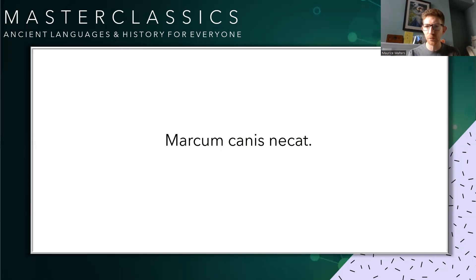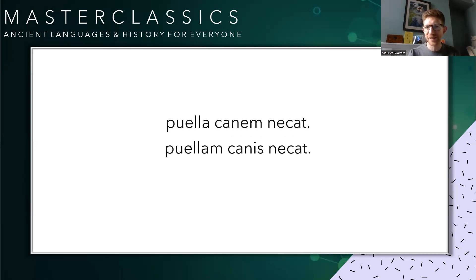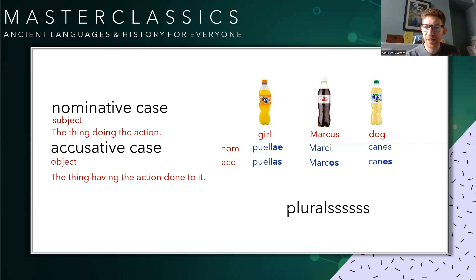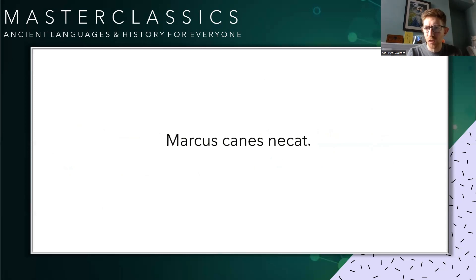Marcus comes to a sticky end in one of them and the dog comes to a sticky end in another. We then looked at how puella operates in the same way: puella canem necat and puella canis necat. Again, the word order is exactly the same, but the meaning is entirely different. The first means the girl kills the dog; the second, the dog kills the girl. Then we had a quick look at plurals. Puella becomes puellas in the accusative plural or puellae in the nominative. Marcus becomes Marci in the plural, and then Marcos, canes and canes — which is pretty unhelpful in the plural for dog.